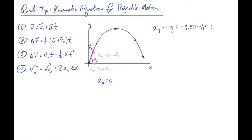Let's look at the horizontal components first. The first and the fourth equations give us, after substituting ax equals zero, that the final x component of velocity equals the initial — there's no change to the horizontal component of velocity in a projectile. The second and third equations tell us the displacement in the horizontal direction: delta x equals v-naught x times t.